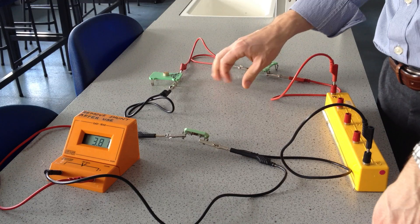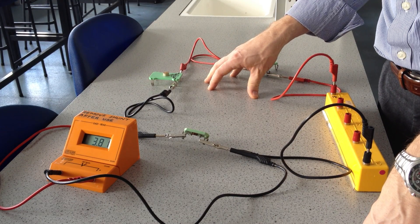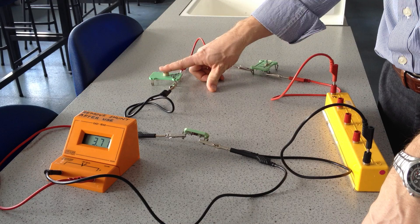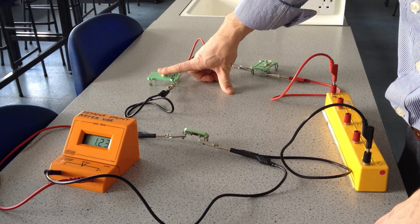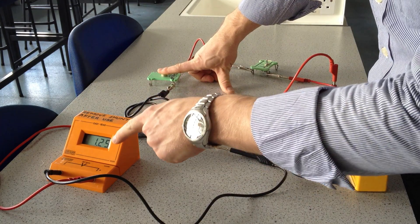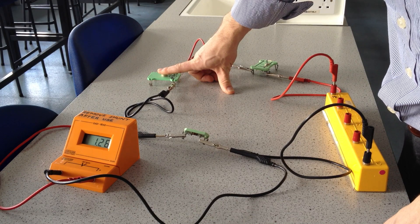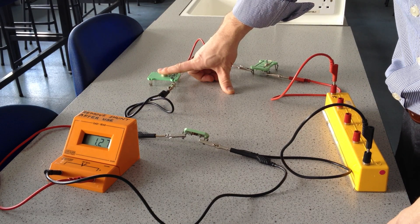I will now decrease the light intensity on the LDR. I'm going to put my finger across it. That's blocking the light off. The voltage output has decreased quite dramatically to about 1.27 volts.